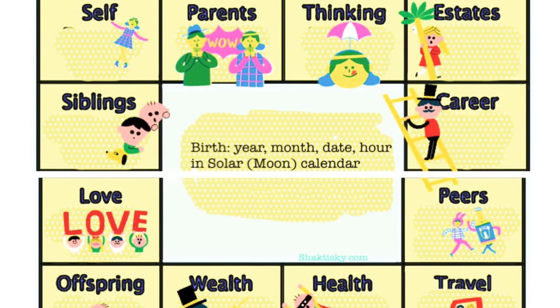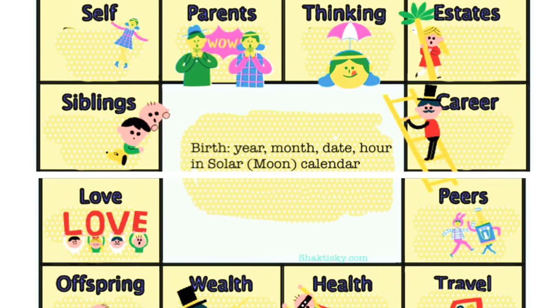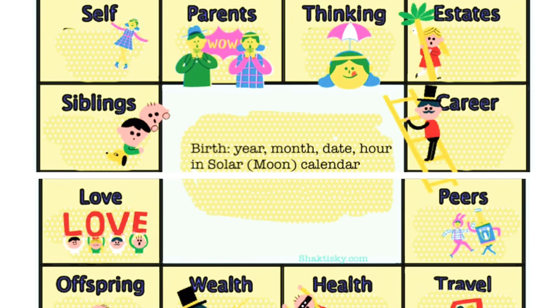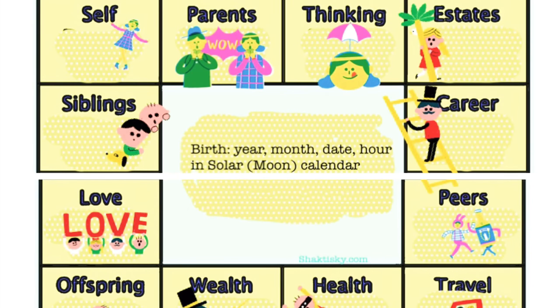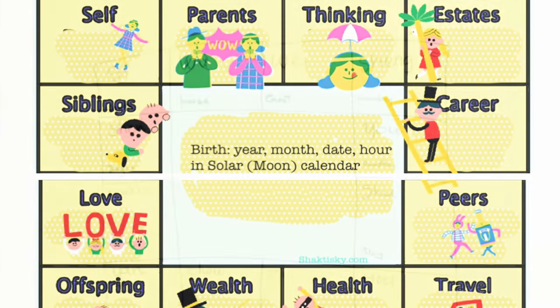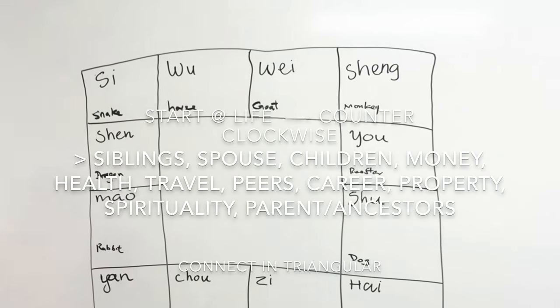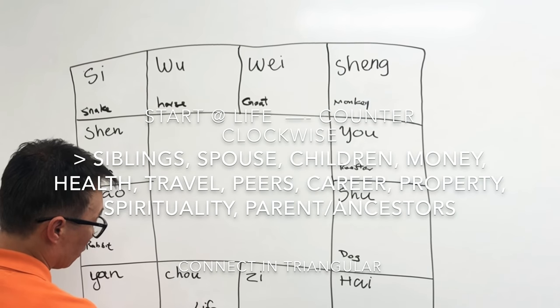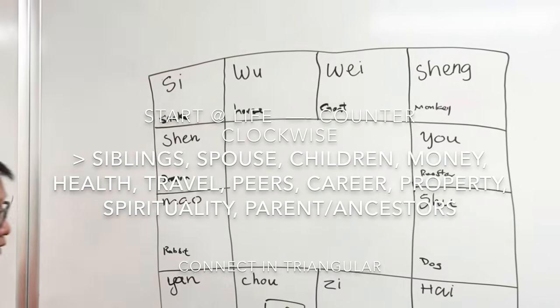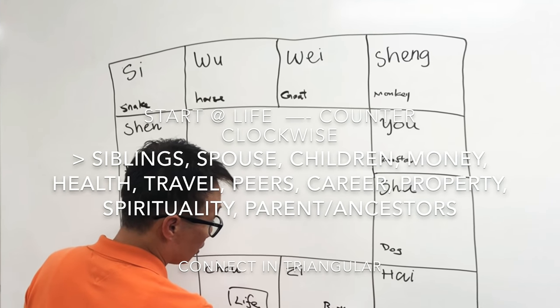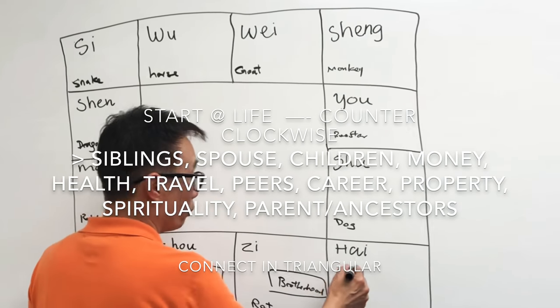Then in the counterclockwise direction, the next one will be your brotherhood. Then the next one will be marriage or wife, spouse, that's right. And then is the children.